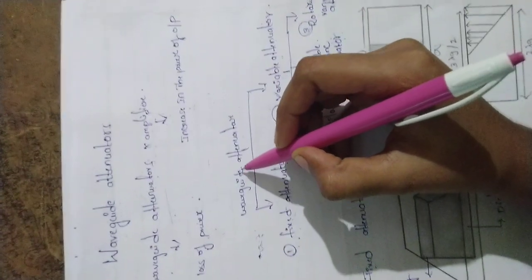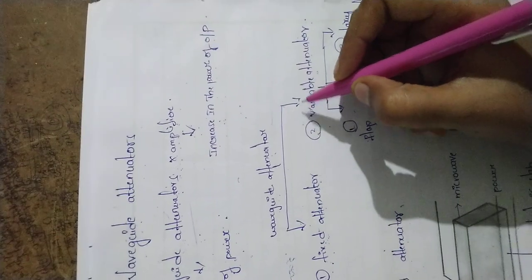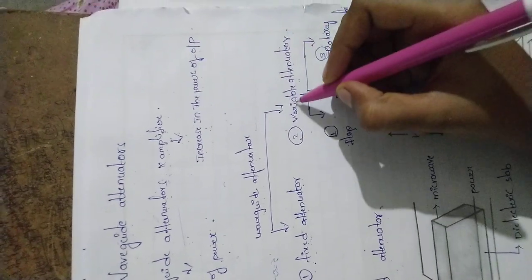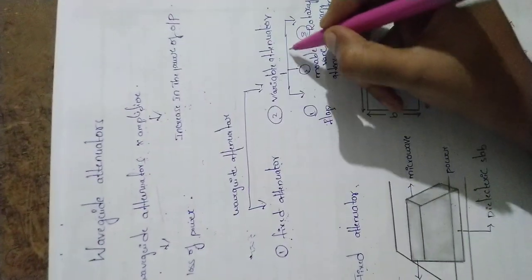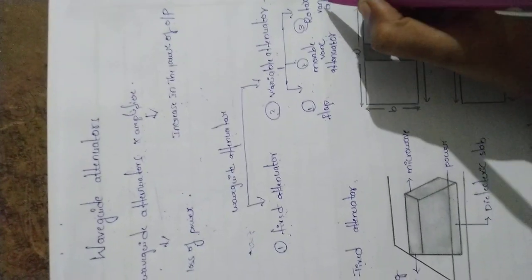Waveguide attenuators are classified into two types: Fixed Attenuator and Variable Attenuator. Variable Attenuator is again classified into three types: Flap Attenuator, Movable Vane Attenuator, and Rotary Vane Attenuator.